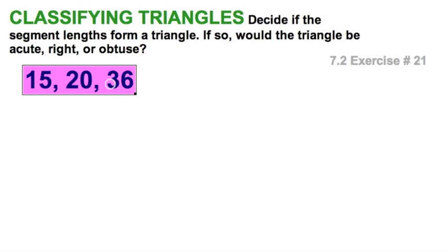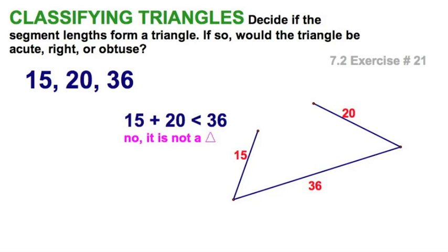Well, let's classify this triangle: 15, 20, 36. But wait. Let's first check the triangle inequality principle. Oh, this is not even a triangle. You can see 15, 20, and 36. Doesn't work out. Remember, any two sides have to add up to more than a third.